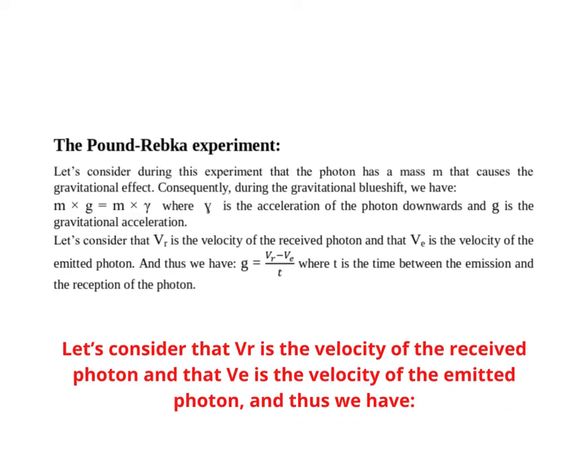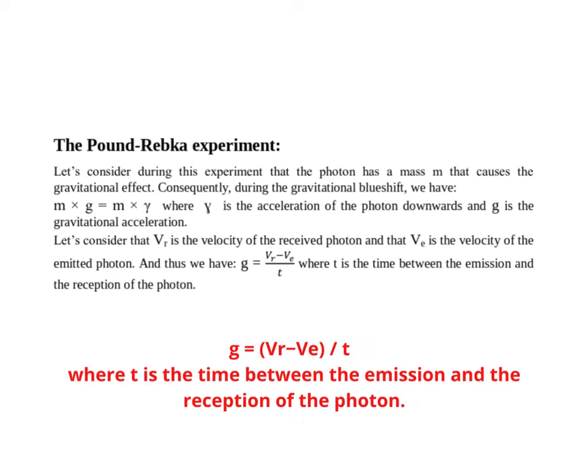Let's consider that vr is the velocity of the received photon, and that ve is the velocity of the emitted photon, and thus we have g equals vr minus ve divided by t where t is the time between the emission and the reception of the photon.